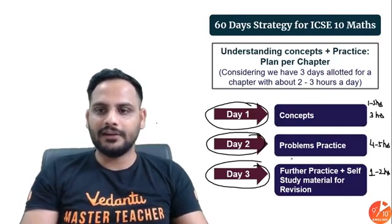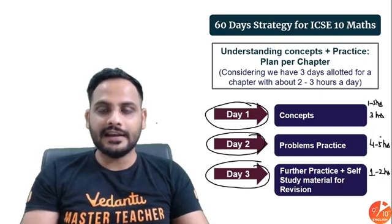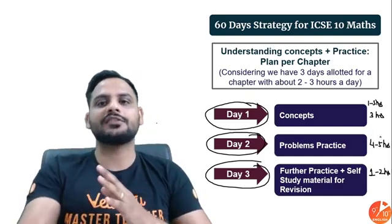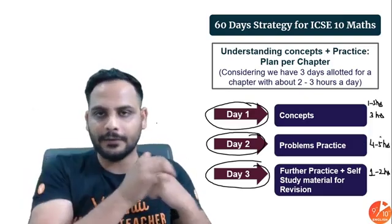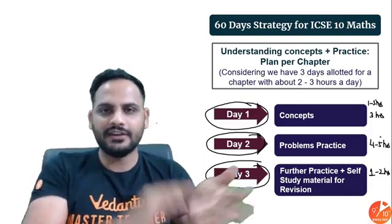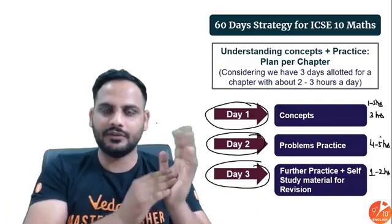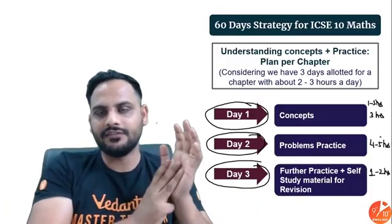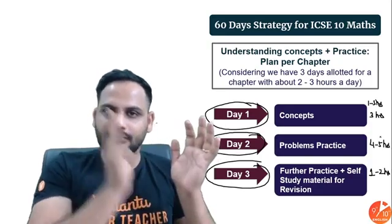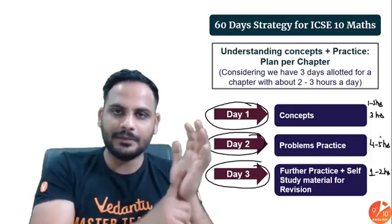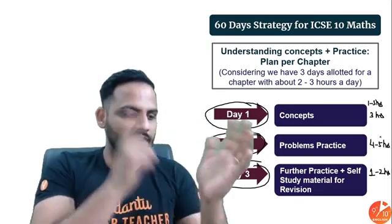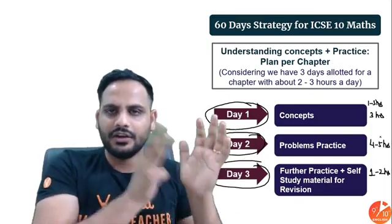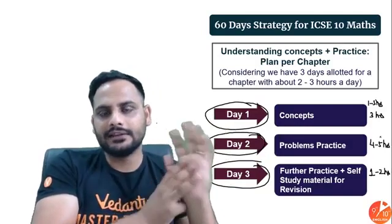While practising problems on Day 2 and dedicating four to five hours to Maths, you can pick an easy subject for the remaining time. You can finish one chapter per subject across two or three subjects — one chapter from Maths, one from Science, one from SST — covering multiple subjects every day.